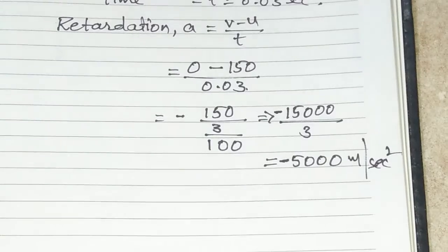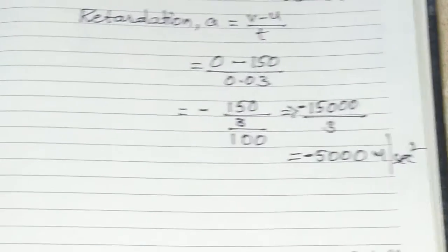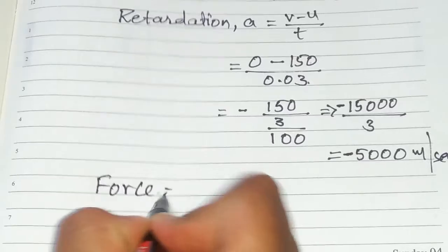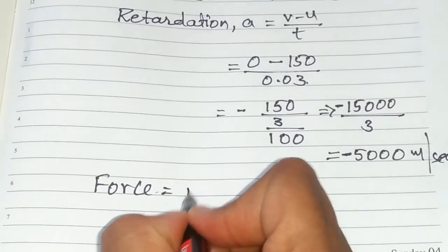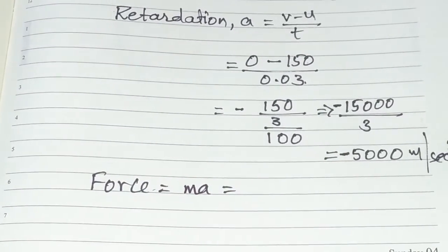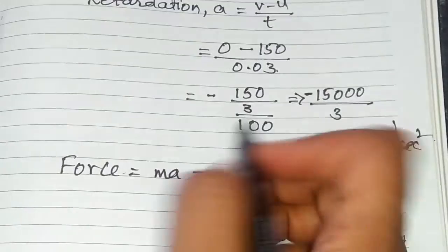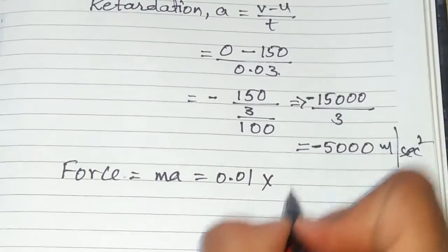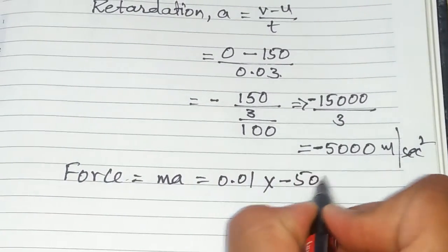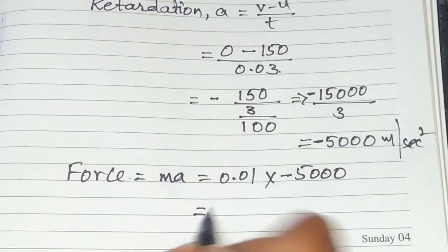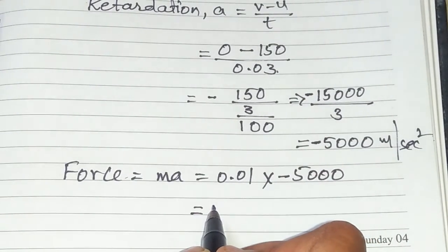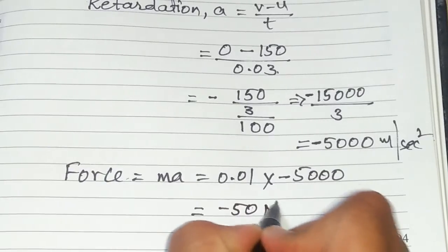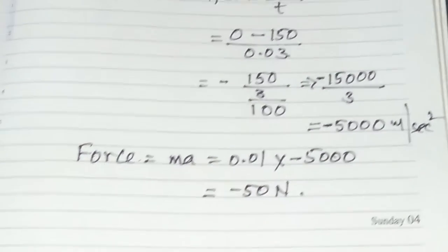Now finding the force using F = m × a. Mass is 0.01 kg and acceleration is minus 5000 m/s². So force equals 0.01 into minus 5000, which gives minus 50 newtons. The magnitude of the force exerted by the wooden block on the bullet is 50 newtons.